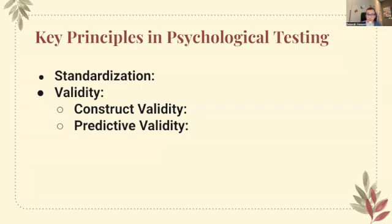We also look at validity — which refers to the accuracy of a test in measuring what it's supposed to measure. We have two types of validity: construct validity — does the test accurately assess the theoretical construct it claims to measure, for example does an IQ test really measure intelligence as theoretically defined — and predictive validity, which refers to the ability of a test to predict future performance or outcomes. For instance, does the SAT predict college success? That's debatable.